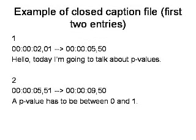In the first line, it's going to have the number 1, which means it's the first closed caption that's going to appear. Then it's the start time to the end time. It's going to start at 2:01 — that means two and one one-hundredth of a second into this YouTube video — and then end at five and a half seconds. During that span of time, the closed caption is just going to say, 'Hello, today I'm going to talk about p-values.' The next closed caption is going to start one one-hundredth of a second later at 5:51, meaning 5.51 seconds in, and it's going to last about four seconds.